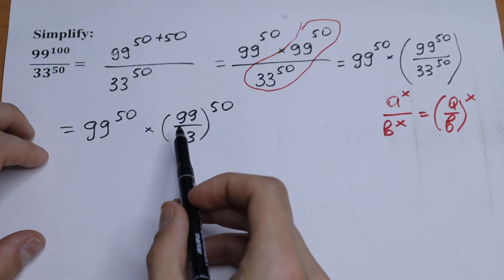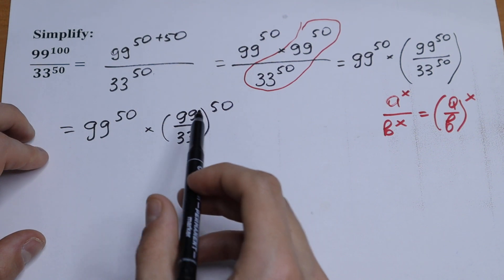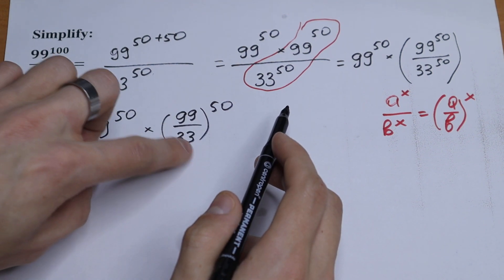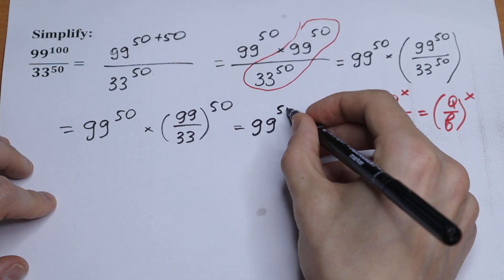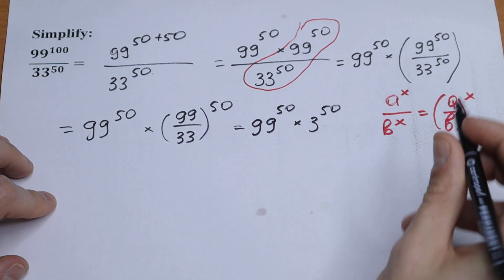And take a look, quickly simplify this in our parenthesis. So as a result we will have 99 divided by 33, it will be 3. So as a result we will have 99 to the power 50 times 3 to the power 50.